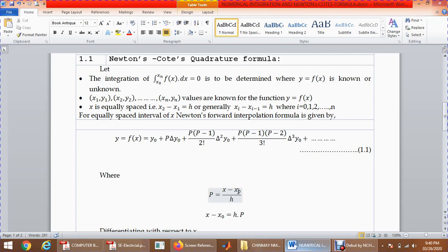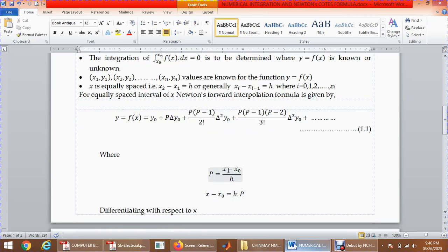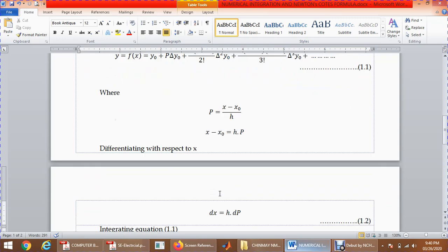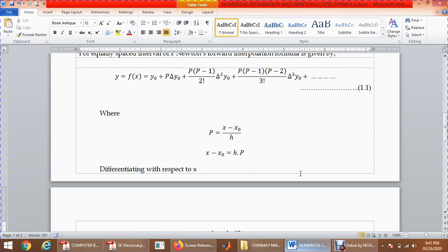I can write this equation as x - x0 = hp. Differentiate this equation with respect to x. Since x0 is a constant value, after differentiating it will be 0. When we differentiate this equation, I will get dx = h dp. Let us assume this is equation number 2.